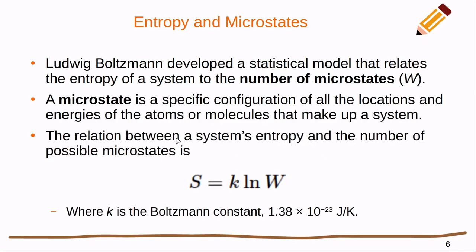Entropy is related to this idea of dispersing out matter and energy and keeping it uniform. Ludwig Boltzmann developed a statistical model to put some math to that. It relates the entropy of the system to the number of microstates. A microstate is a state that a system could find itself in. It's a specific configuration of all the locations and energies of the atoms or molecules that make up the system.